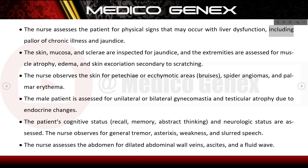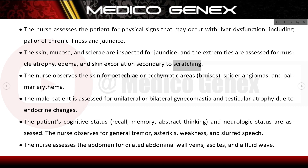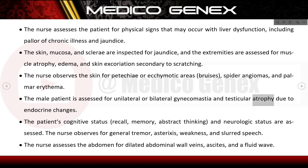During physical examination, the nurse assesses for pallor and jaundice, inspecting the skin, mucosa, and sclera. The extremities are assessed for muscle atrophy, edema, and skin excoriation from scratching. The skin is observed for petechiae, ecchymotic areas, bruises, spider angiomas, and palmar erythema. Male patients are assessed for gynecomastia and testicular atrophy due to endocrine changes.